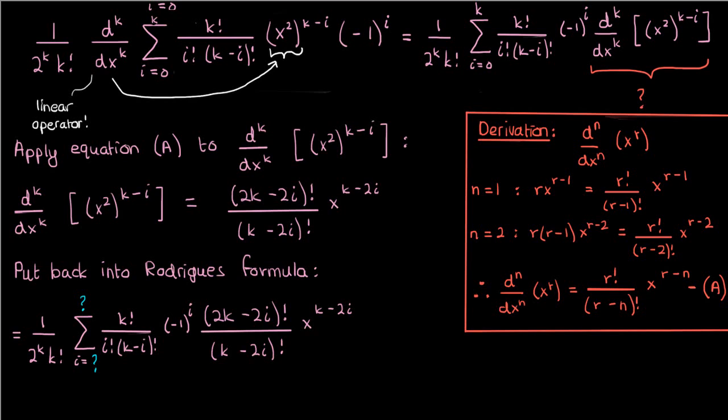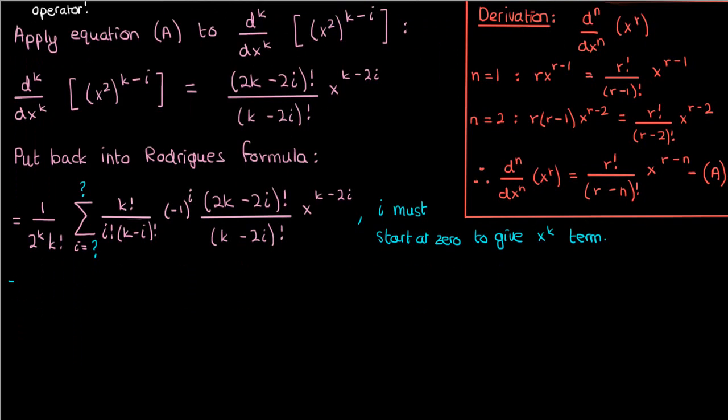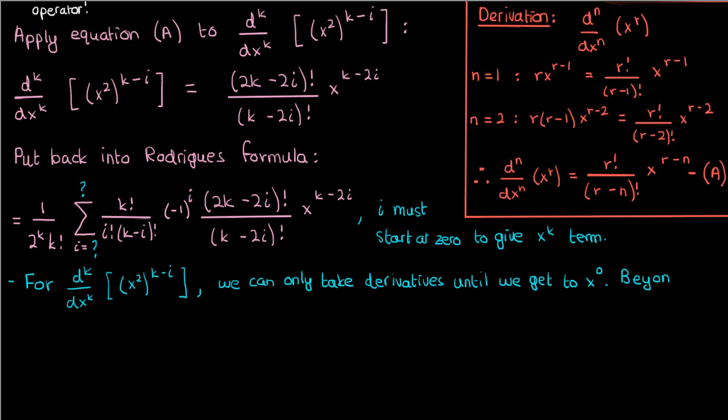The only thing left to do now is figure out the limits on the running index i. We already know that i has to start at 0 to give you the x to the power k term, but where does it end? Well, notice that k and i are both positive integers, and when we take the kth derivative of x to the power some positive integer like 2k minus 2i, then we can only take derivatives to the point where we get to x to the power 0.